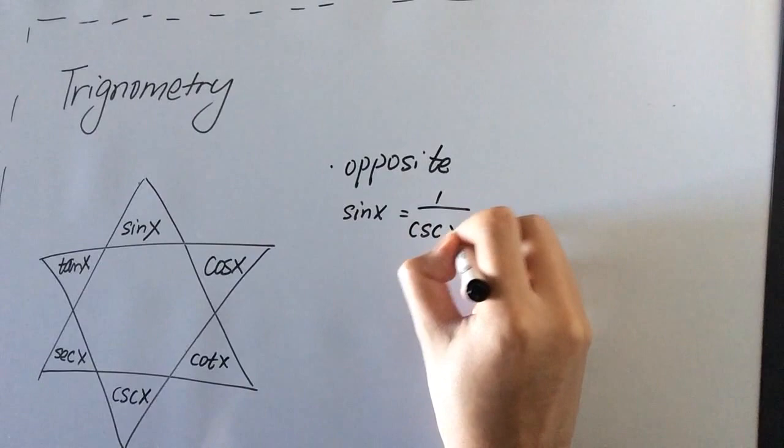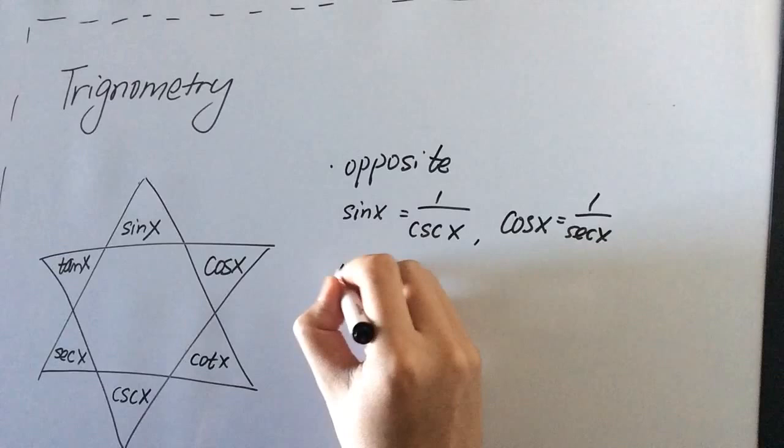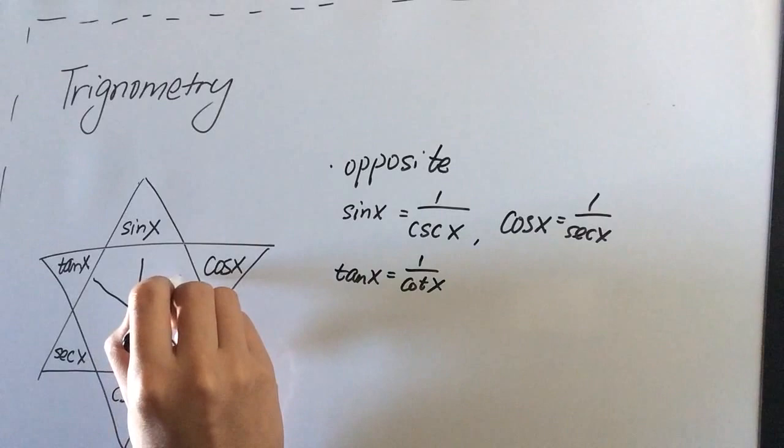And similarly, we have cosine x equals 1 over secant x. And also tangent x equals 1 over cotangent x. So we have this. It's reciprocal of that. This is reciprocal of that. And this is reciprocal of that. That's the opposite.